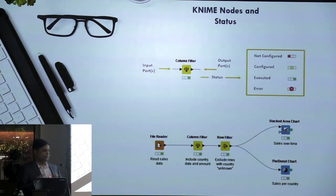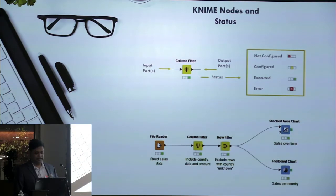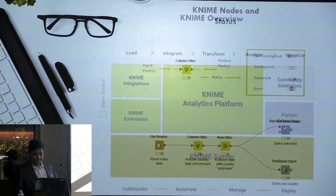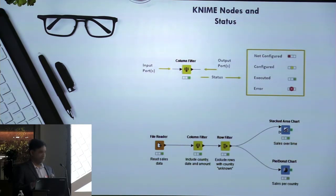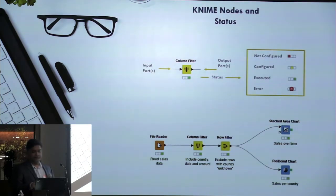In the workflow editor, you can use a file reader, filter particular columns — for example, if you have seven columns and need only five, you can filter out the other two. You can also filter rows and generate graphs on the fly. Once you build the workflow connecting all nodes, you can find the node status. A node can be in one of four states: not configured is red, configured and connected is amber/yellow, executed is green, and error is red.